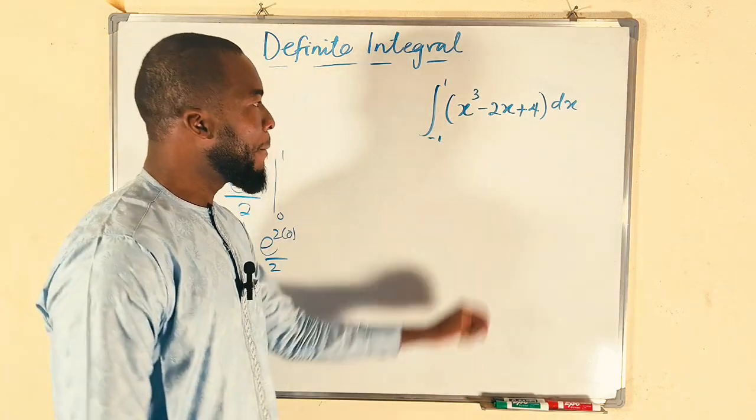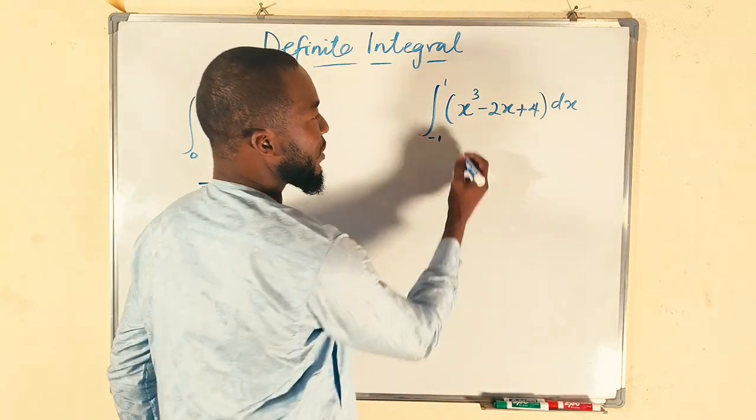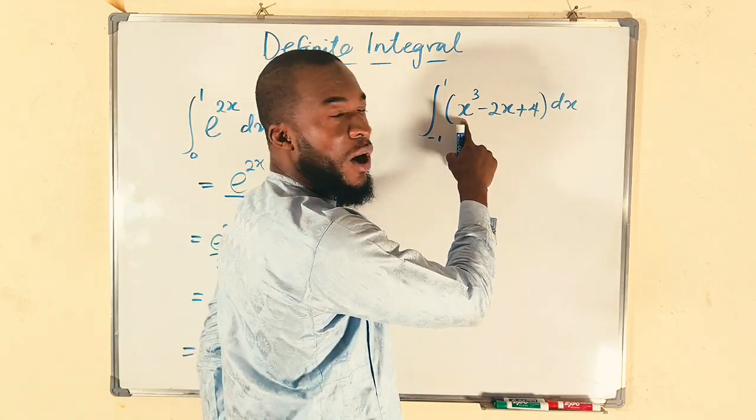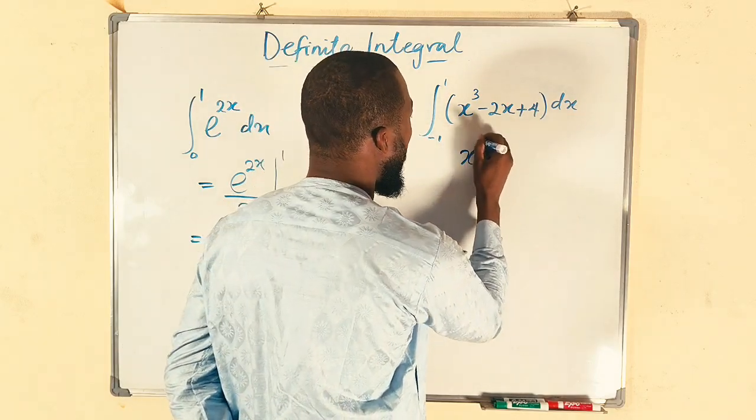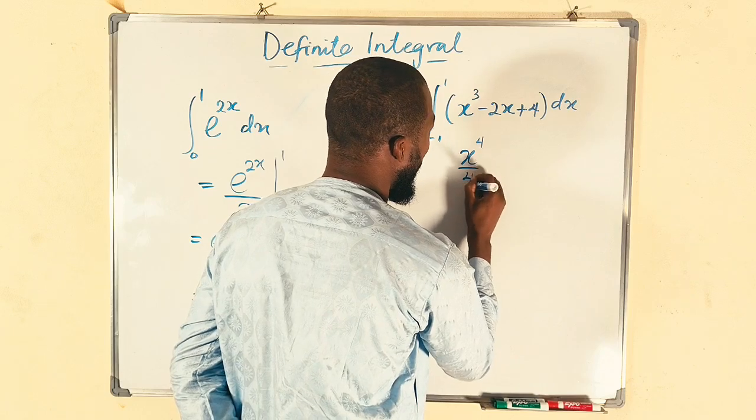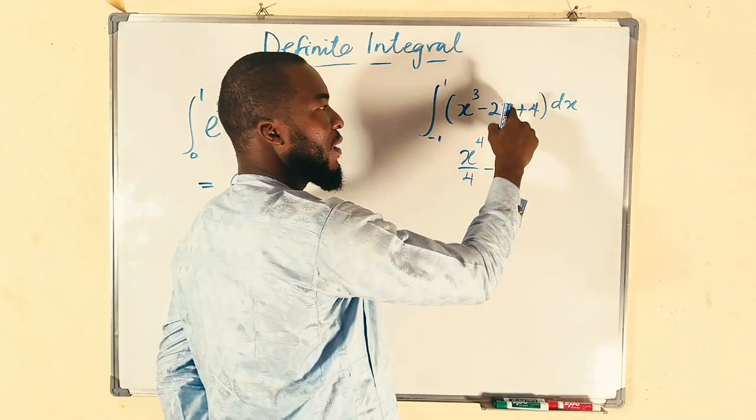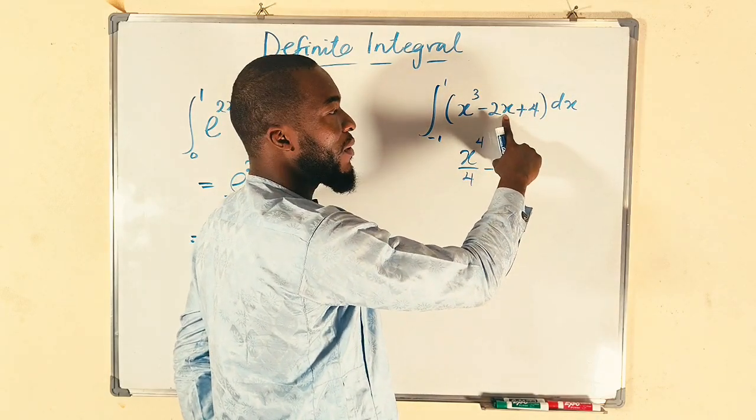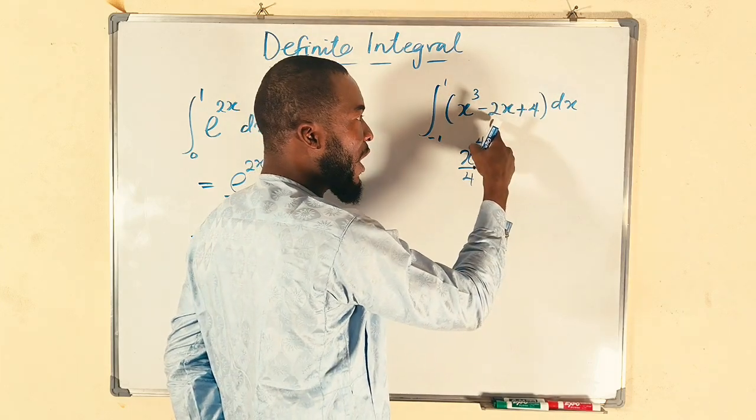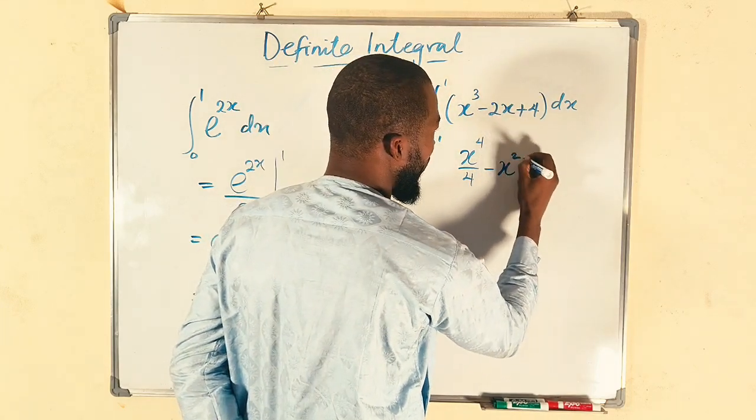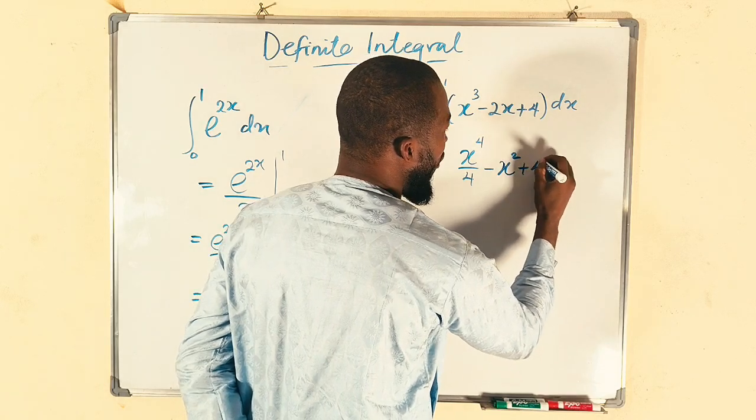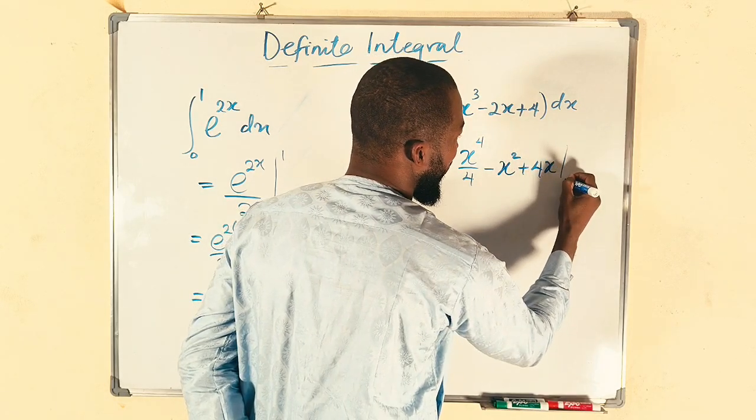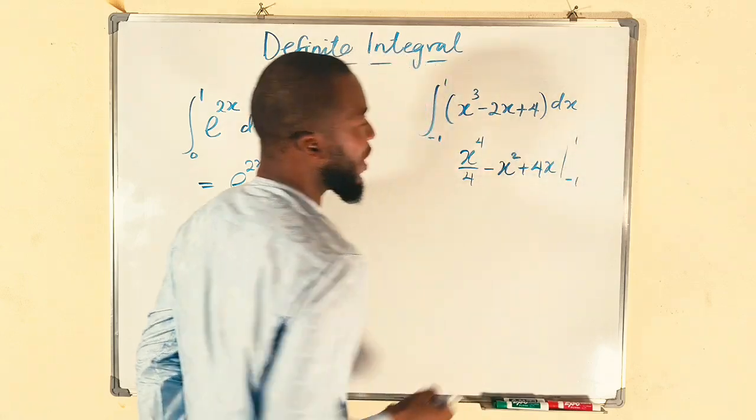Let's move to the other one. Let's integrate this one. If you integrate x to the power of 3, it becomes x to the power of 4 divide by 4 minus. If you integrate x, it becomes x squared divide by 2. And that 2 will cancel this 2. So we only have x squared, then plus 4x from negative 1 to positive 1.